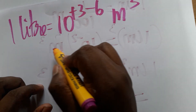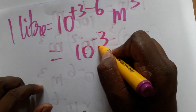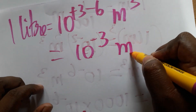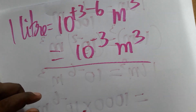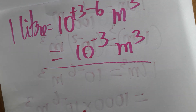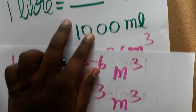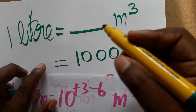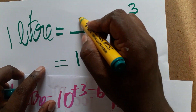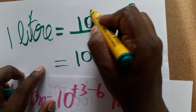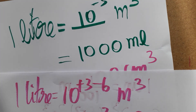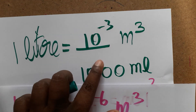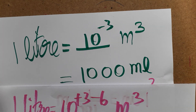So finally, one liter is equal to 10 power minus 3 meter cube. We have successfully converted one liter to meter cube. Thank you for watching. If you like my channel, please subscribe.